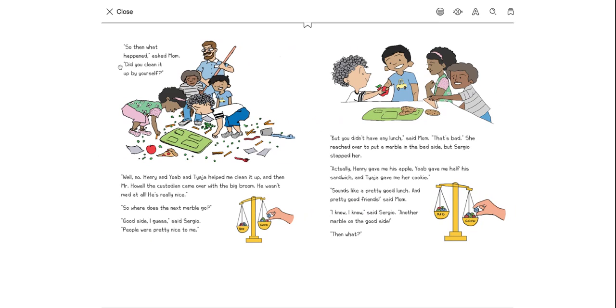You could put an extra marble in for the bad side for getting laughed at, said mom. So then what happened? Asked mom. Did you clean up by yourself? Well, no. Henry and Bob and Ty Yuck helped me clean it up. And then Mr. Harwell, the custodian, came over with a big broom. He wasn't mad at all. He's really nice. So where does the next marble go? Good side, I guess, said Sergio. People were pretty nice to me.